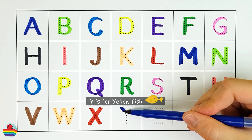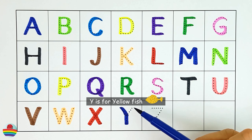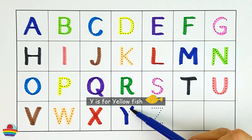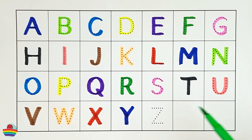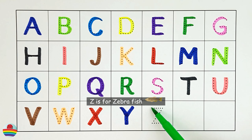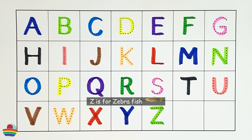Y. Y is for yellow fish. Z. Z is for zebra fish. Why won't you think with me?